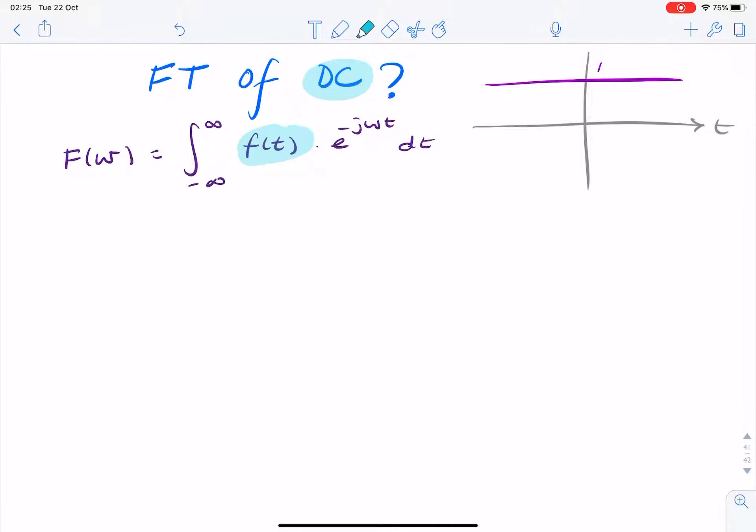And our signal is simply one. So I'll just erase that and replace with one. So that was the definition of the Fourier transform.